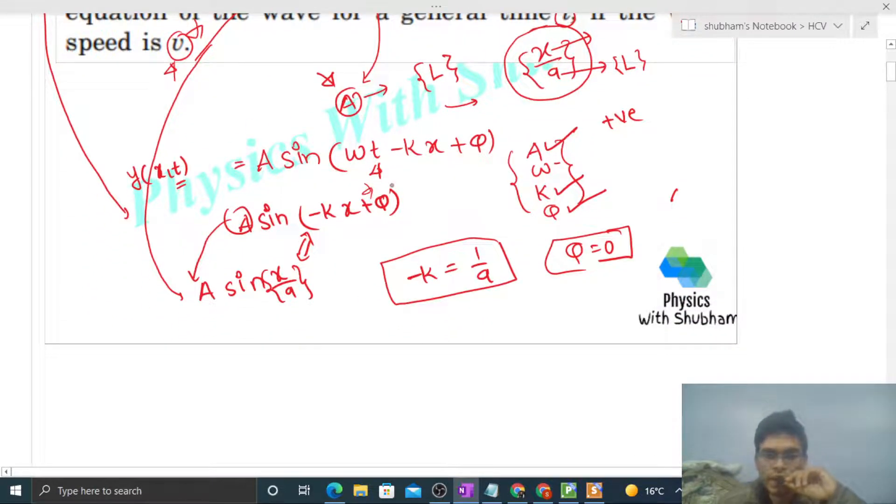Speed of wave is nothing but coefficient of time divided by coefficient of x, that is given v. So yaha dekho, omega is nothing but v into k. So v into k ka value aap kya put karoge? Minus of one upon a. So is tarah se aapko omega ka value bhi aa gaya.